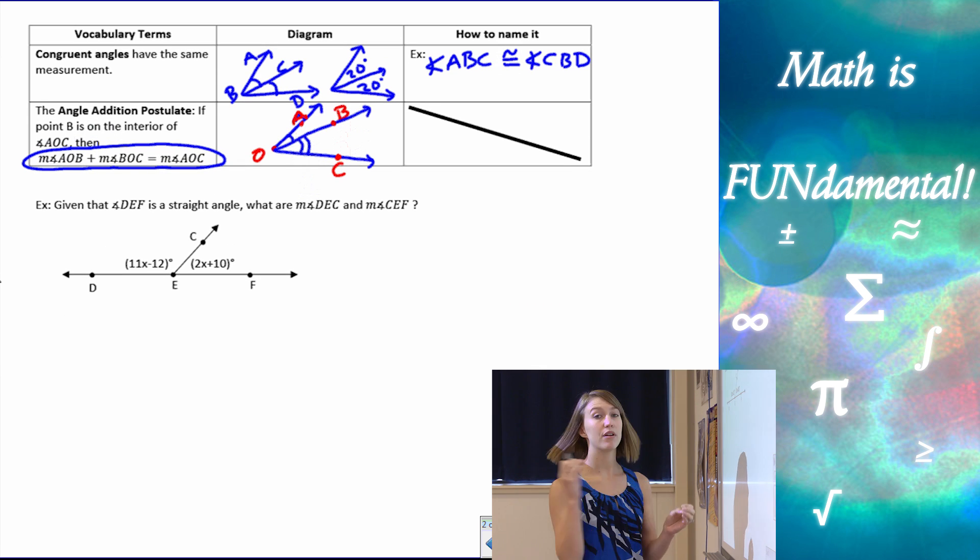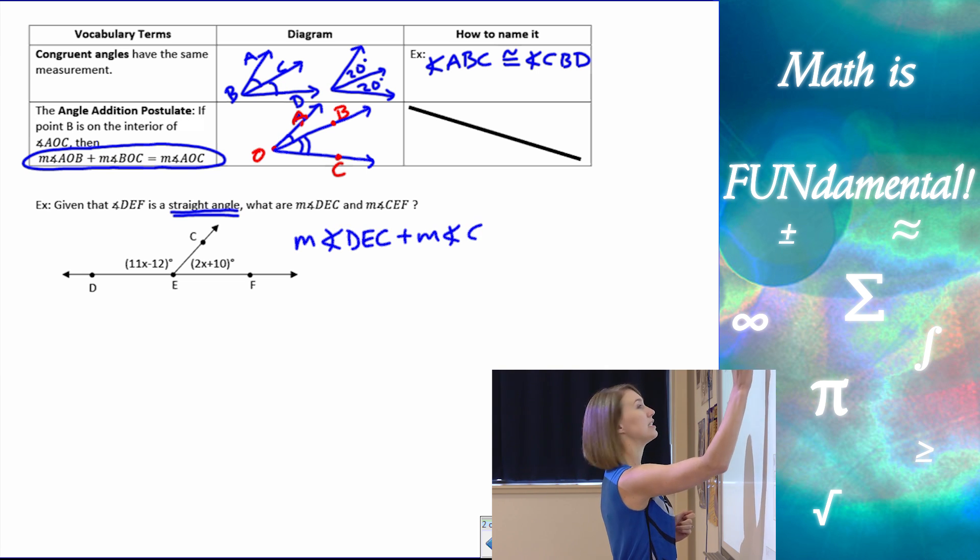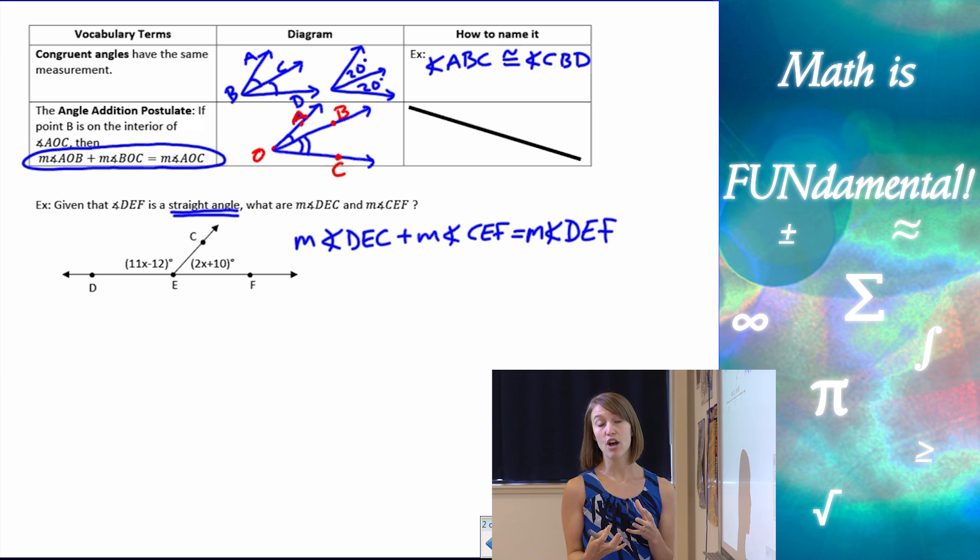Let's close this lesson with a little bit of an example. We're going to put a few things together here. We're given the angle DEF is a straight angle. So there's one term that we learned. We're going to need to use that information. They want us to find the measure of DEC and CEF. So they want us to find each one of those separate angles. So we're actually going to use straight angle, which we remember is 180 degrees, and we're going to use our angle addition postulate here. Before I make my equation, let's actually write this out.